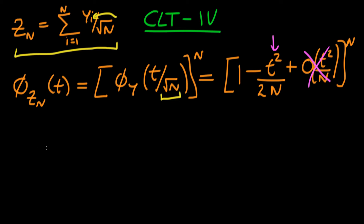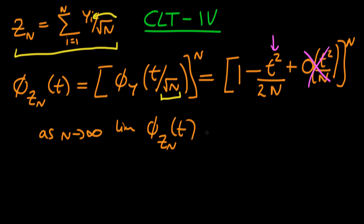As n tends to infinity, we can find the limit of the characteristic function of Z_n in terms of t. That is just this whole term raised to the power n, and it turns out that in the limit as n tends to infinity, this expression equals e^(-t²/2).